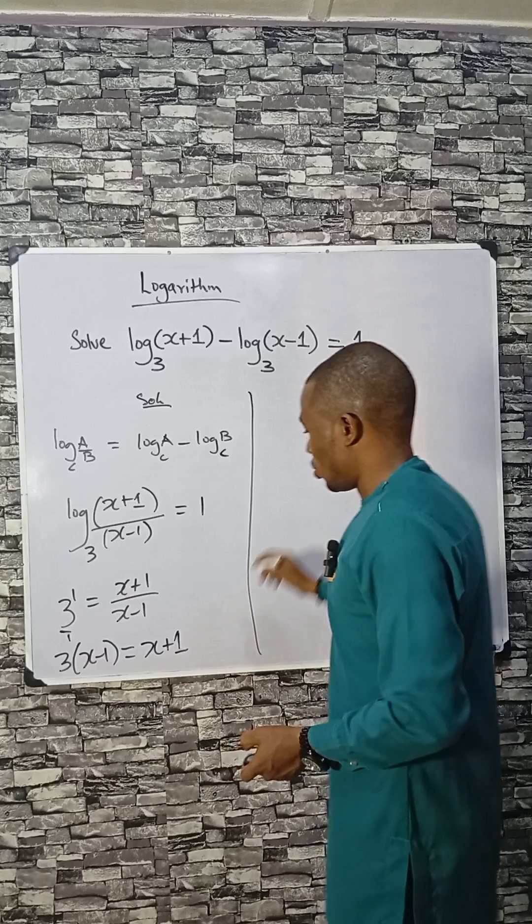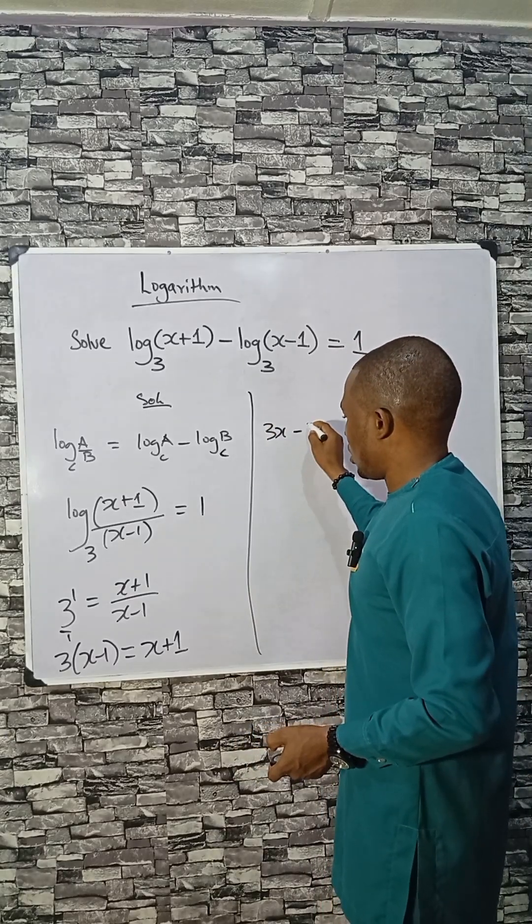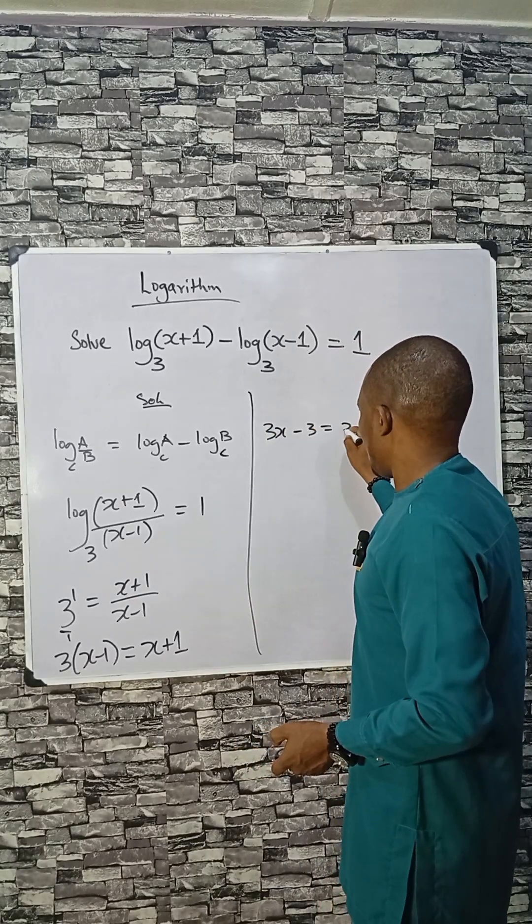Now bracket this, I will have 3x minus 3 equals x plus 1.